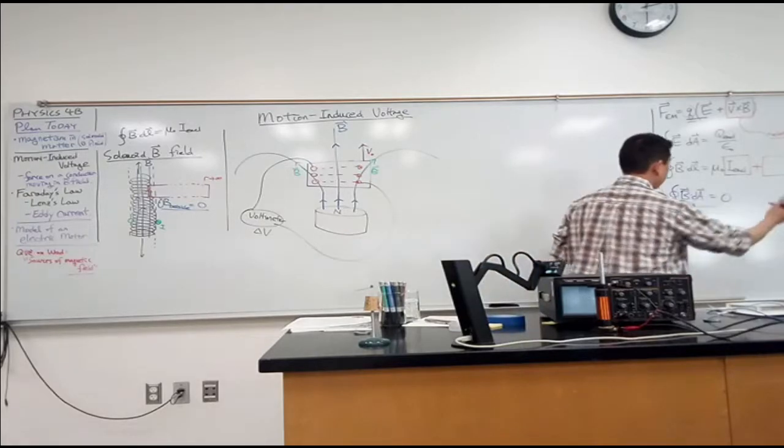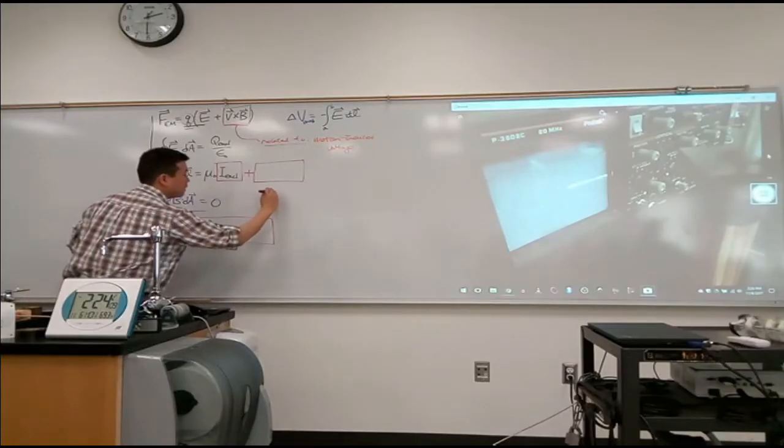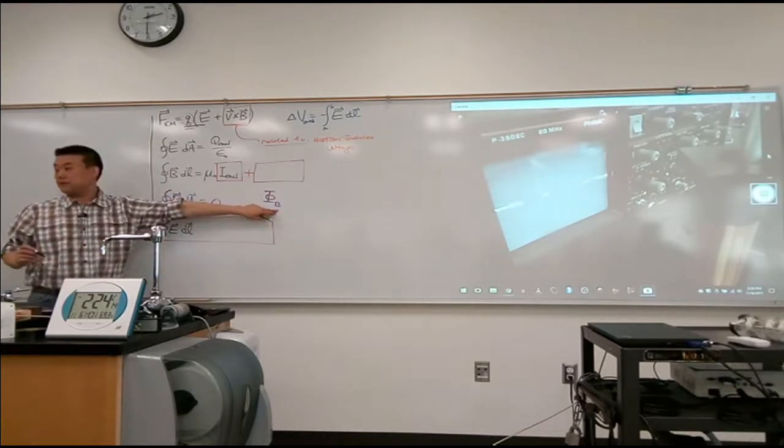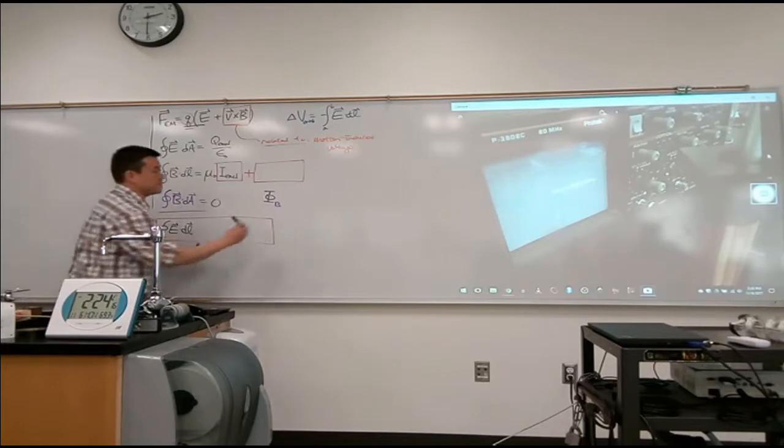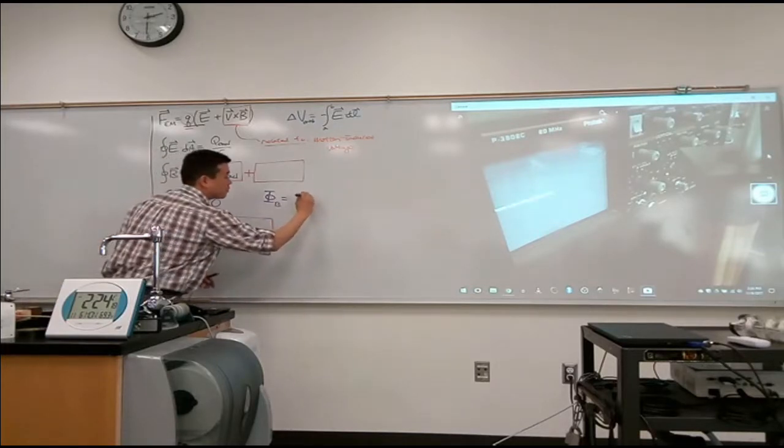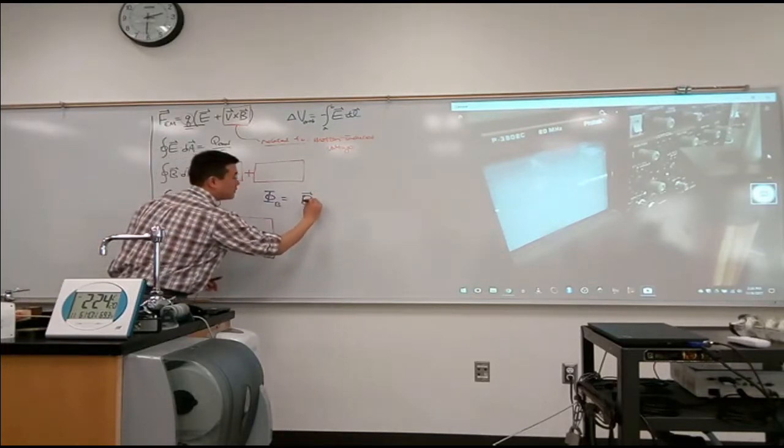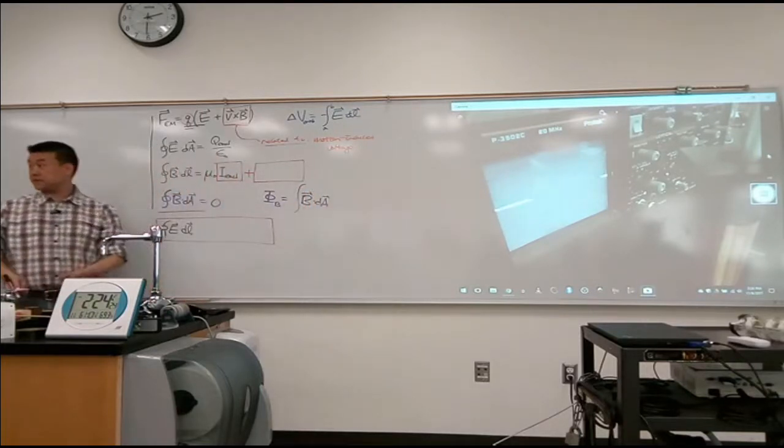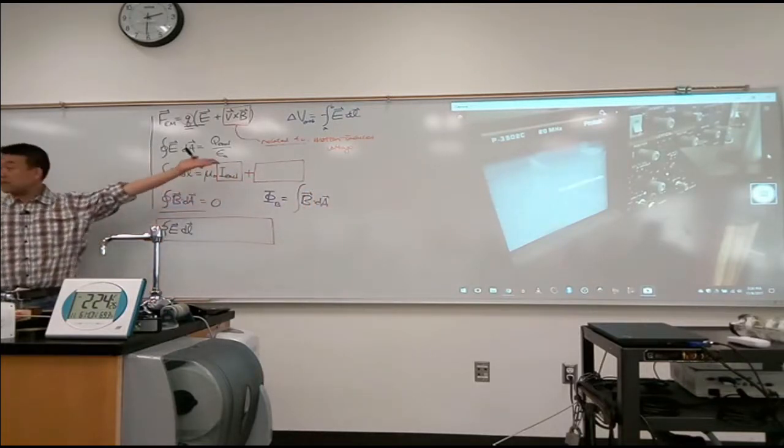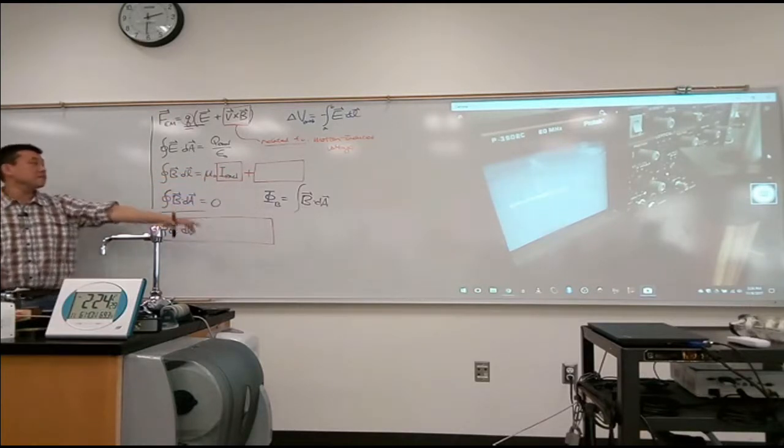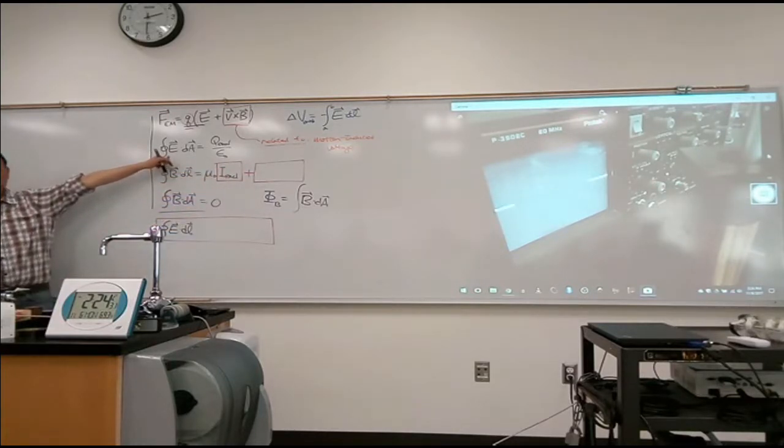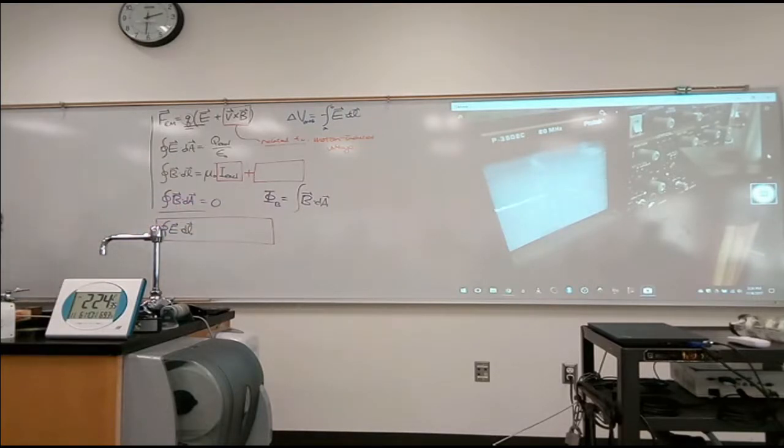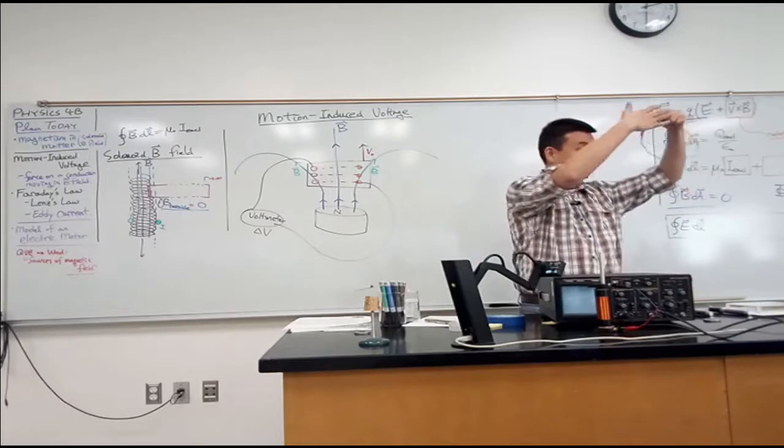So let me just write down that definition of magnetic flux. So the magnetic flux, we use this symbol, capital phi, subscript B. All this means is it's the surface integral of B dot dA over some surface. It doesn't have to be closed. It can be open. If it's a closed surface, then it's like the Gaussian surface that we are using. If it's open surface, then it's like the open surface that's bounded by this loop.